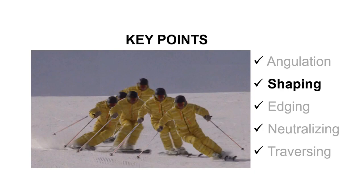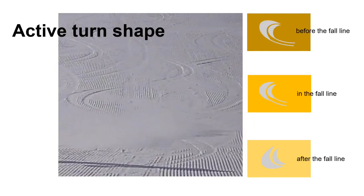So how and where can we actively shape the turn? Basically there are three options where you can turn the skis. You can actively turn them before the fall line, in the fall line, or after the fall line. For the ideal short turn, I want you to actively shape your turns in the fall line. I will talk about the other options later if you are interested.